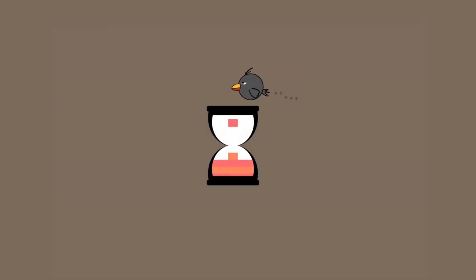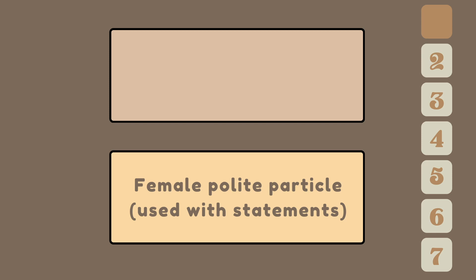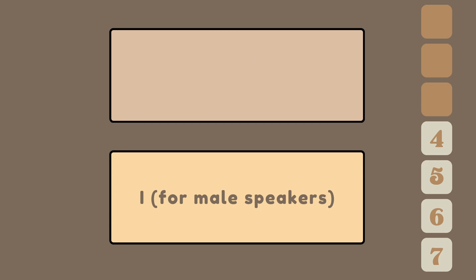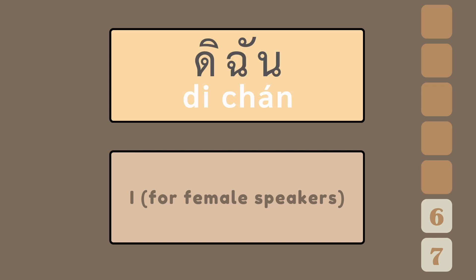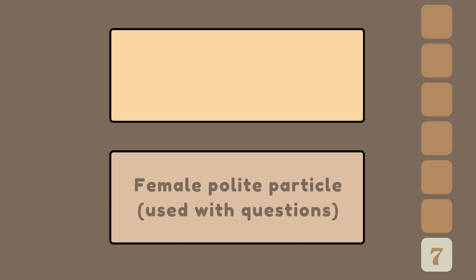Now, let's see if you remember how to say the words you have learned. What do you say at the end of a sentence to sound polite, if you are a man? — ครับ. And if you are a woman? — ค่ะ. How do you say you? — คุณ. How do you say I for male speakers? — ผม. How do you say I for female speakers? — ดิฉัน. What do you say at the end of a question to sound polite if you are a man? — ครับ. And if you are a woman? — ค่ะ.